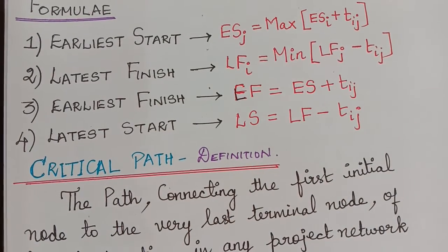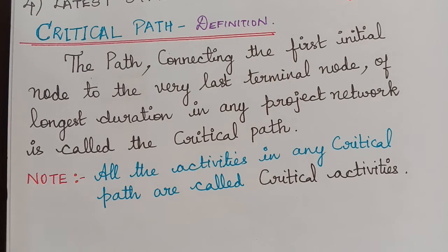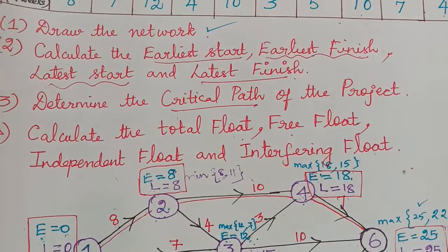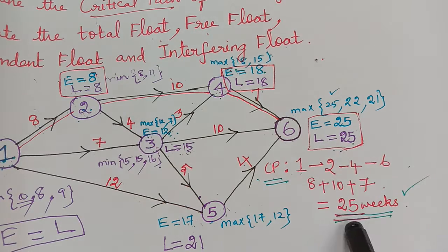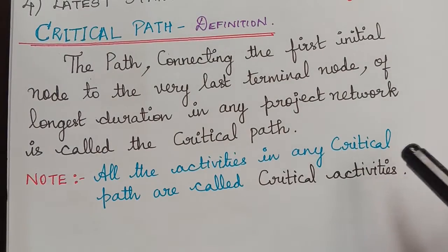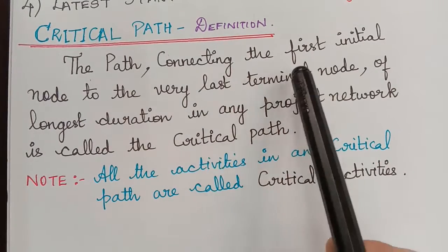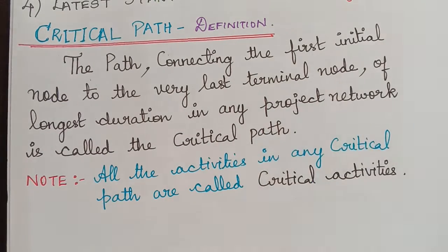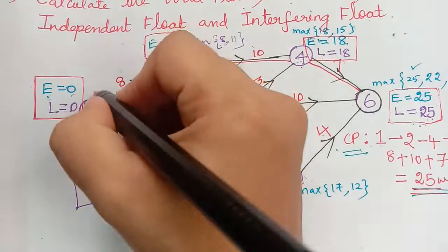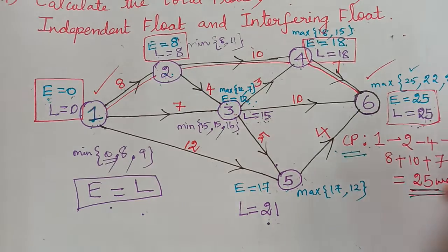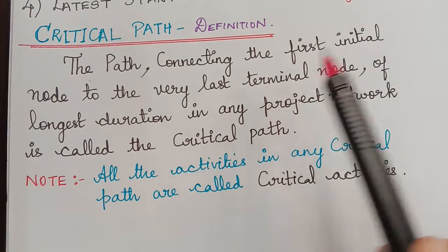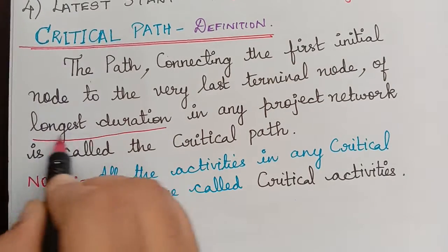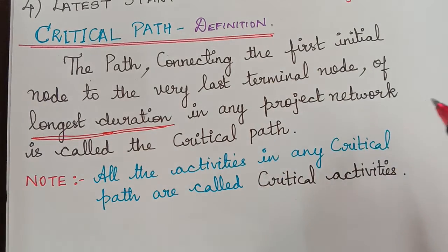These are the four formulas used in that problem. While doing the network, we also found the critical path. For that problem, we saw the critical path as 1 to 2, 2 to 4, 4 to 6, and the duration to travel that path is 25 weeks. The critical path is defined as the path connecting the first initial node to the last terminal node of the longest duration in any project network.